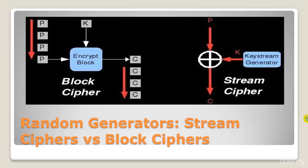We can think of an elf generating a random tape of the required length each time he is presented with a new key as input, giving it to us and keeping a copy on his scroll for reference in case he is given the same input again. To recover the data, we go back to the generator, enter the same key, get the same long file of random data, and XOR it with our ciphertext to get our plaintext back. Other people with access to the key stream generator cannot generate the same key stream unless they know the key exactly — and that is what stream ciphers are.